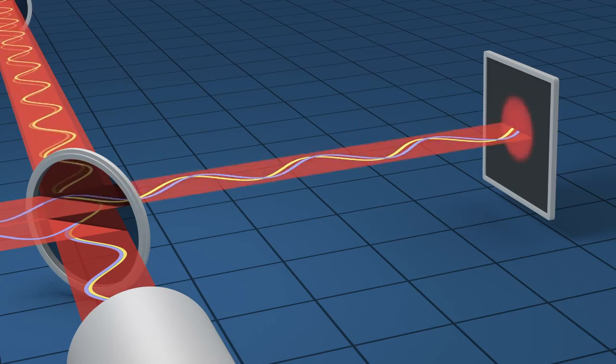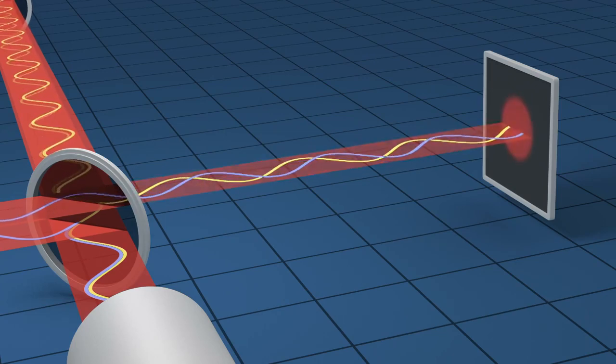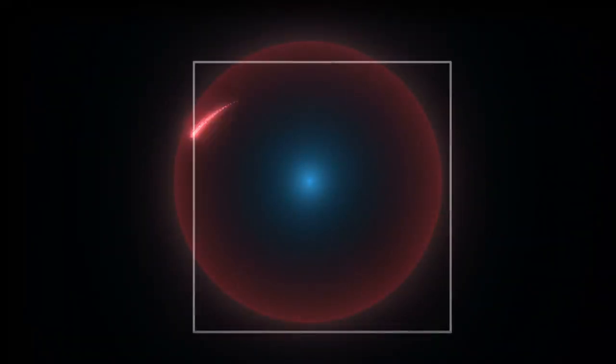Incredibly tiny stretching and squeezing of space can actually be measured directly in this way. How little does space distort to make this signal?